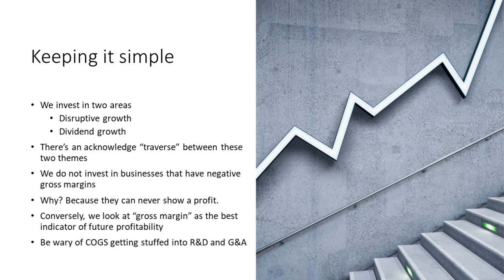We don't invest in businesses that have negative gross margins, because they can never show a profit. People often point to Tesla — go pull up Tesla's S1 from about 12 years ago and they always had positive gross margins. We look at a positive gross margin as the best indicator of future profitability. There's a big difference between a hardware business with a 15% gross margin and a SaaS business with 80% gross margins. Our recent piece on ARM showed 96% gross margins — those people are printing money.